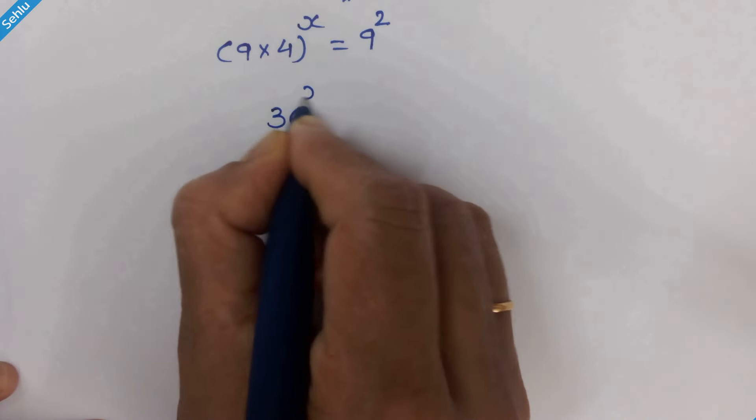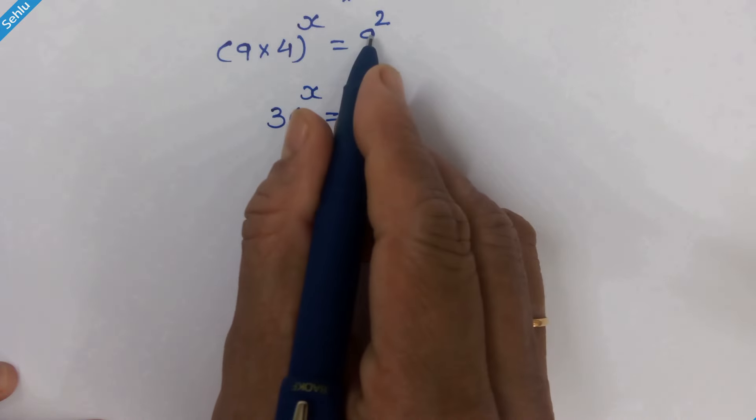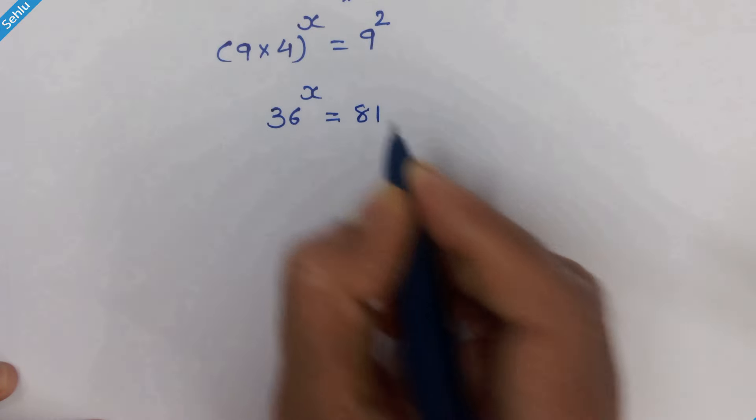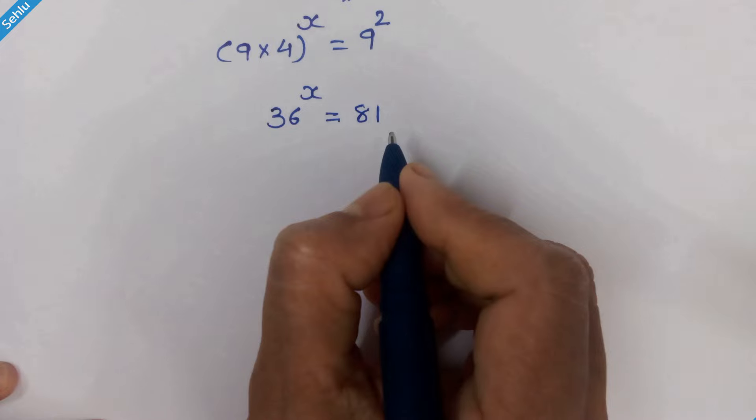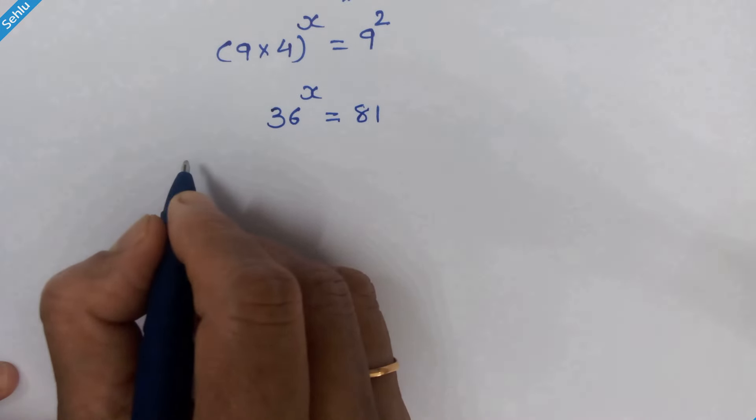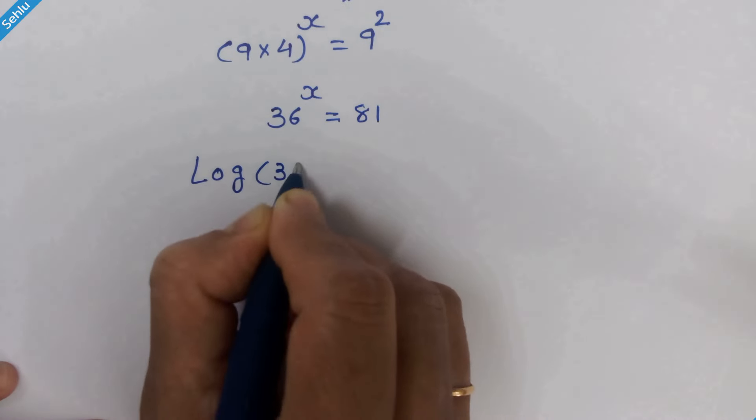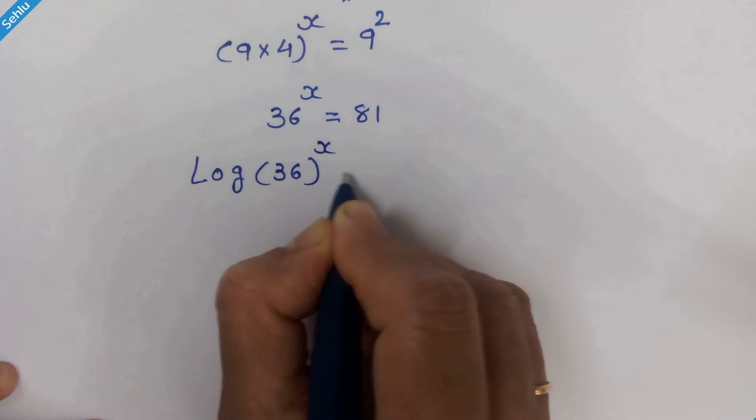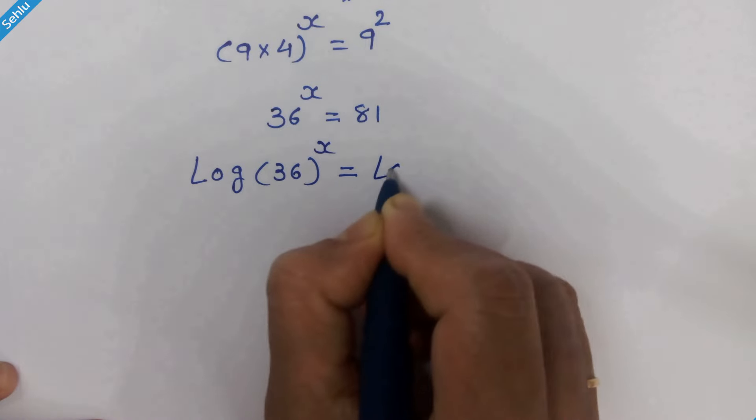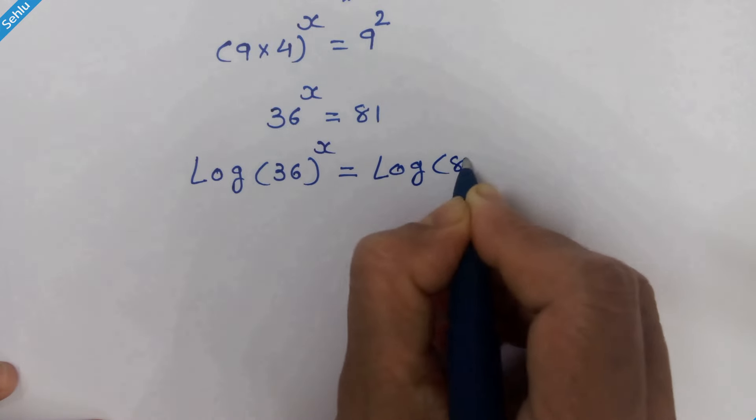So 36 raised to x equals 9 squared, which is 81. Now we need to take the log of both sides. We have log of 36 raised to x equals log of 81.